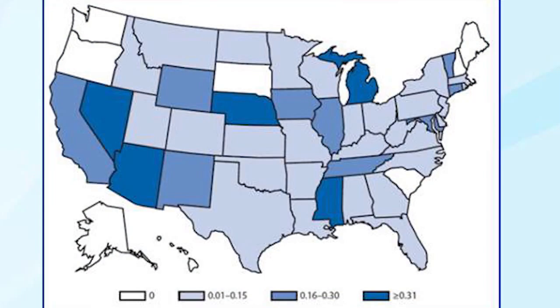Moving on to the National Notifiable Disease Surveillance System — this is a collaboration between CDC and the Council of State and Territorial Epidemiologists, or CSTE. Many of the diseases on the state list are also nationally notifiable, but reporting by state is voluntary. Each state determines which diseases and conditions are reportable within their jurisdiction. They also decide which ones from the list of nationally notifiable diseases they will report. CSTE and CDC collaborate closely in developing this national list, which is revised yearly.